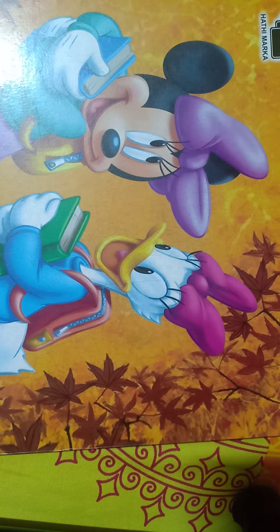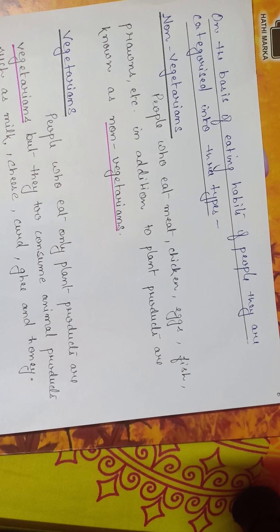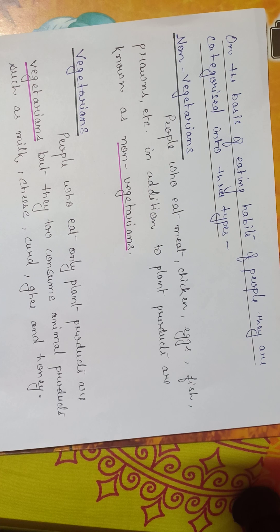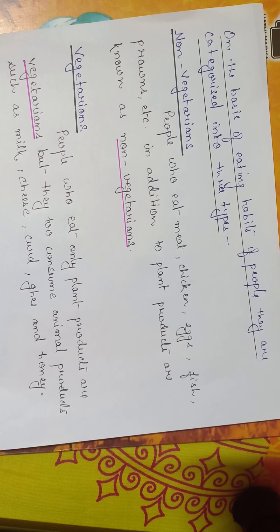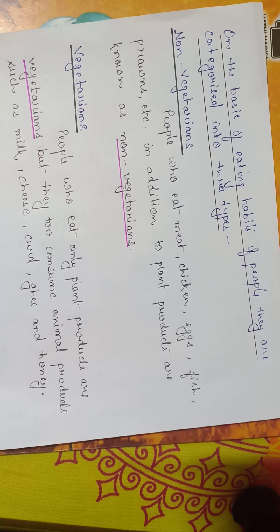Now, on the basis of eating habits, people are categorized into three types. First is non-vegetarian. People who eat meat, chicken, egg, fish, prawn, etc., in addition to plant products, are known as non-vegetarians.